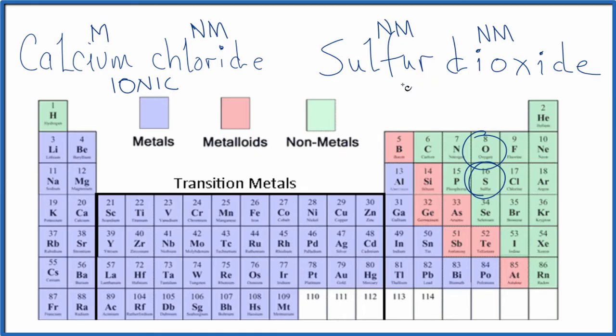When we have two nonmetals, we have what's called a covalent compound. This is also called molecular. And because the electrons are shared between the sulfur and the oxygen atoms, we don't have to worry about ions. We don't have ions involved, so we don't need to worry about ionic charge.